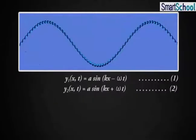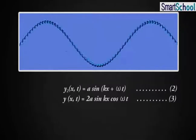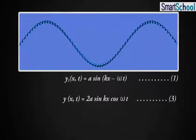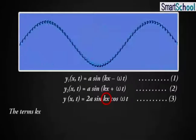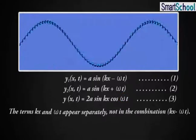Here we note an important difference in the wave pattern described by equation 3 from that described by equation 1 or equation 2. The terms kx and ωt appear separately, not in the combination (kx - ωt).